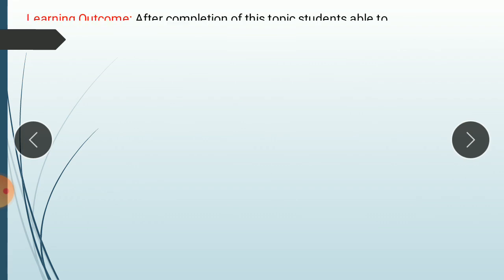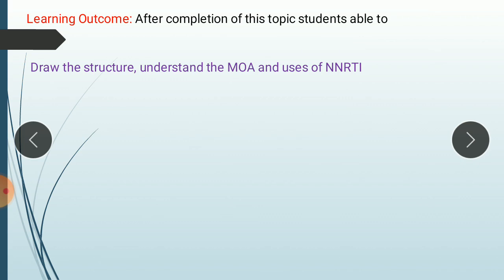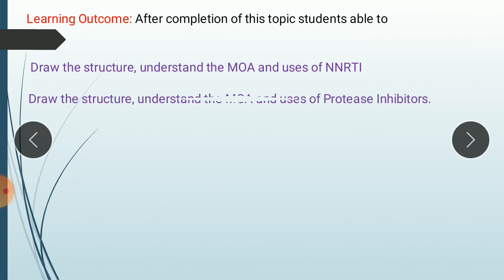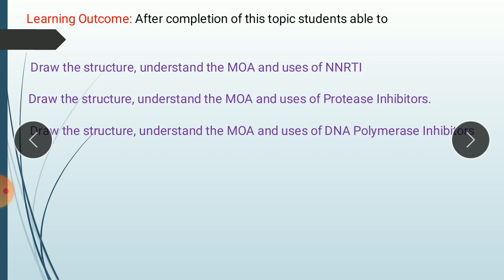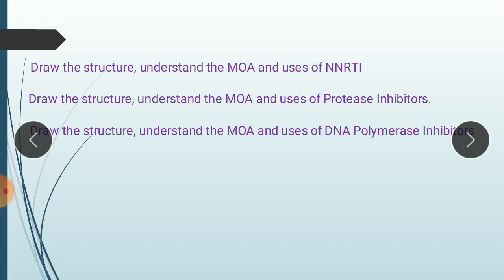Learning outcomes: after completion of this topic, students will be able to draw the structure, understand mechanism of action and uses of NNRTI; draw the structure, understand mechanism of action and uses of protease inhibitor; and draw the structure, understand mechanism of action and uses of DNA polymerase inhibitor.